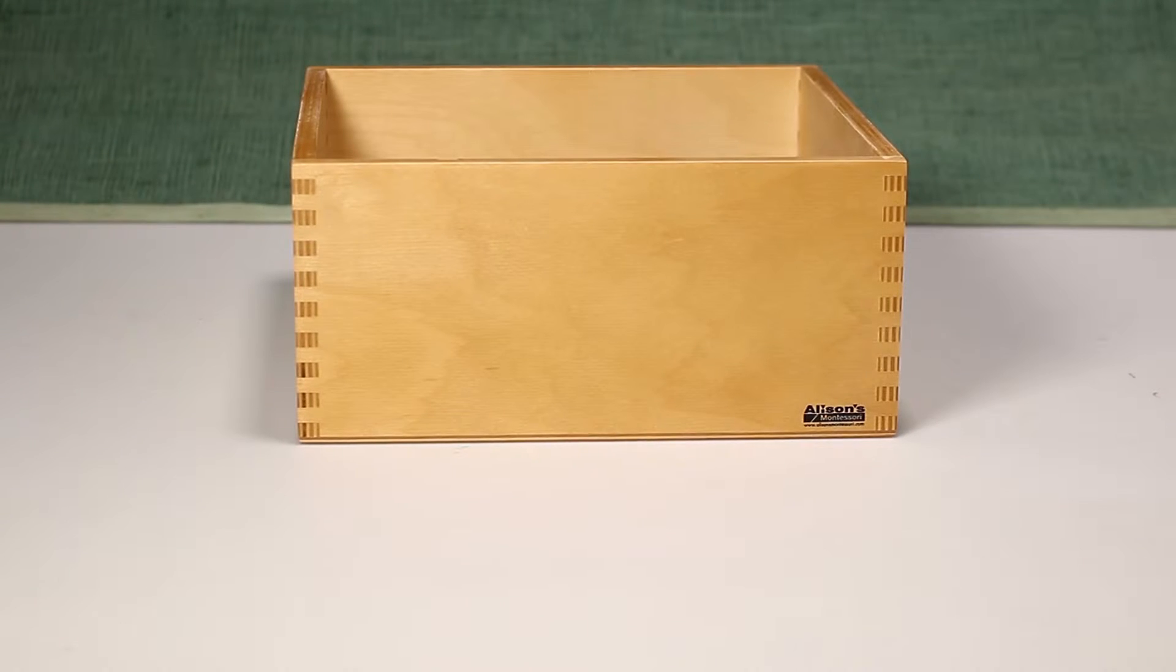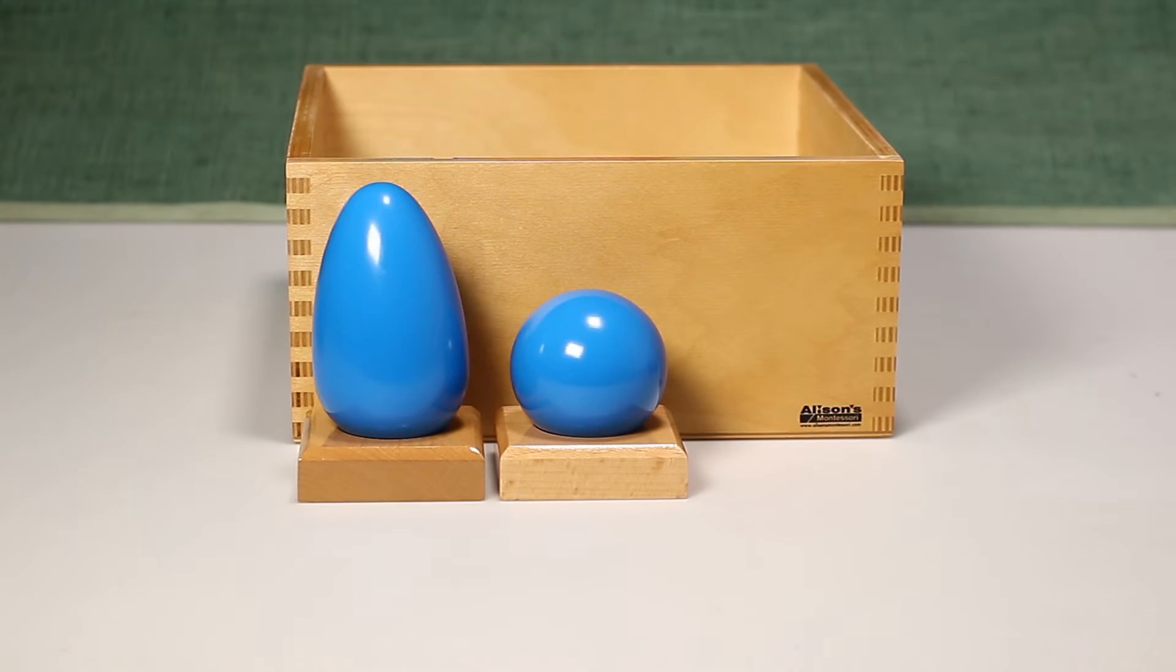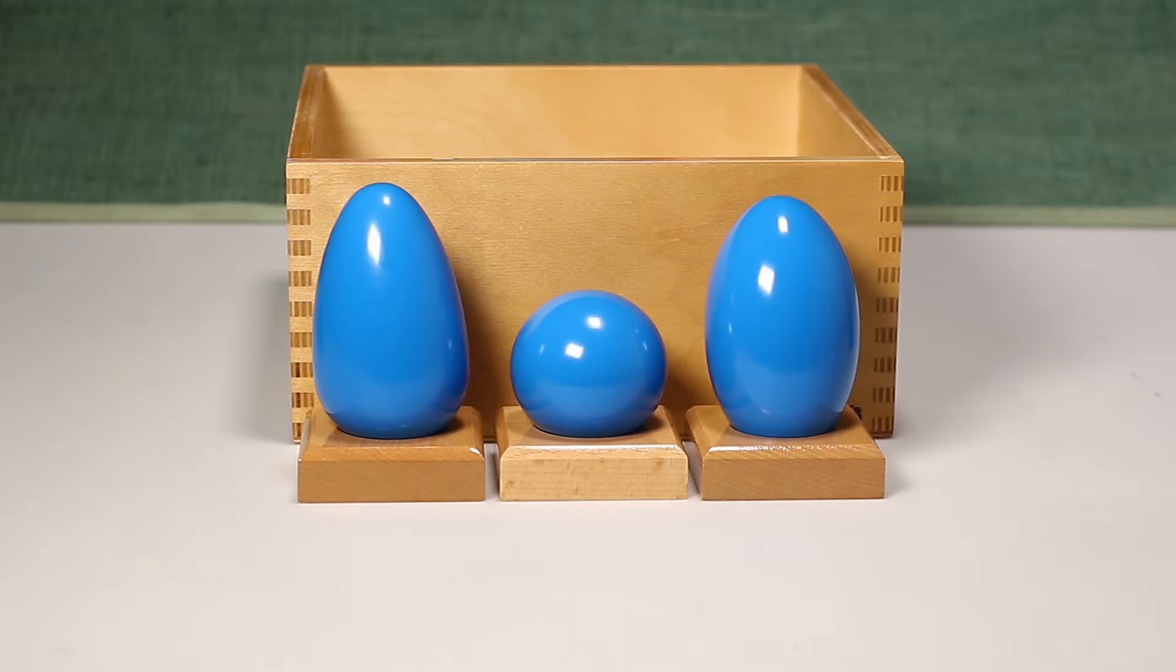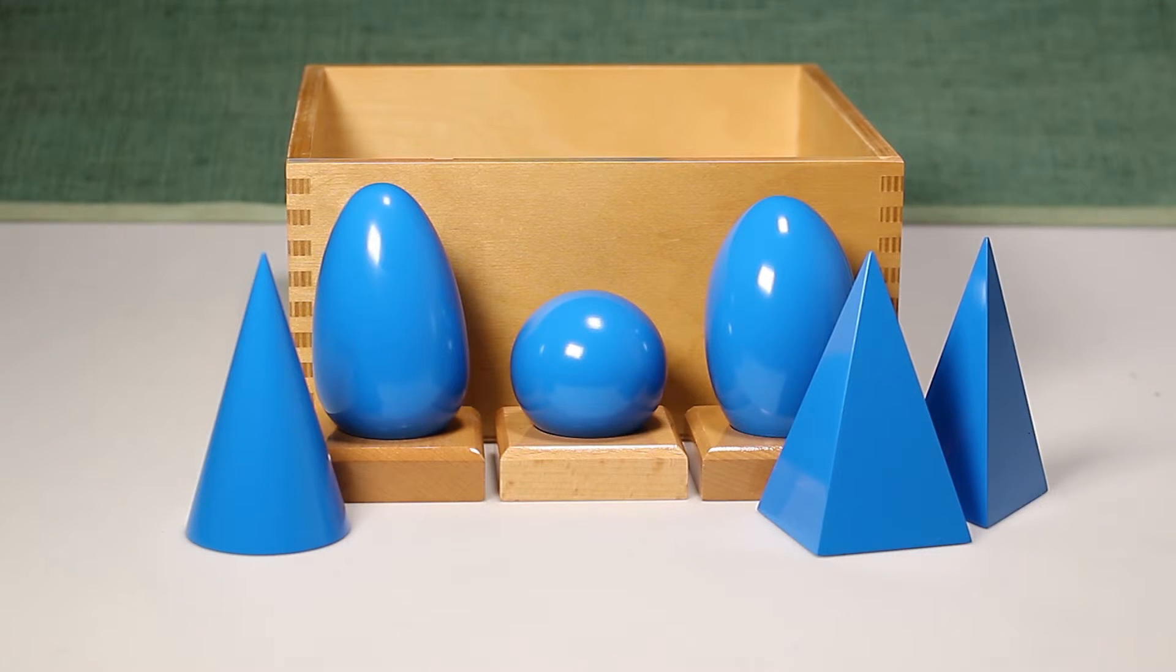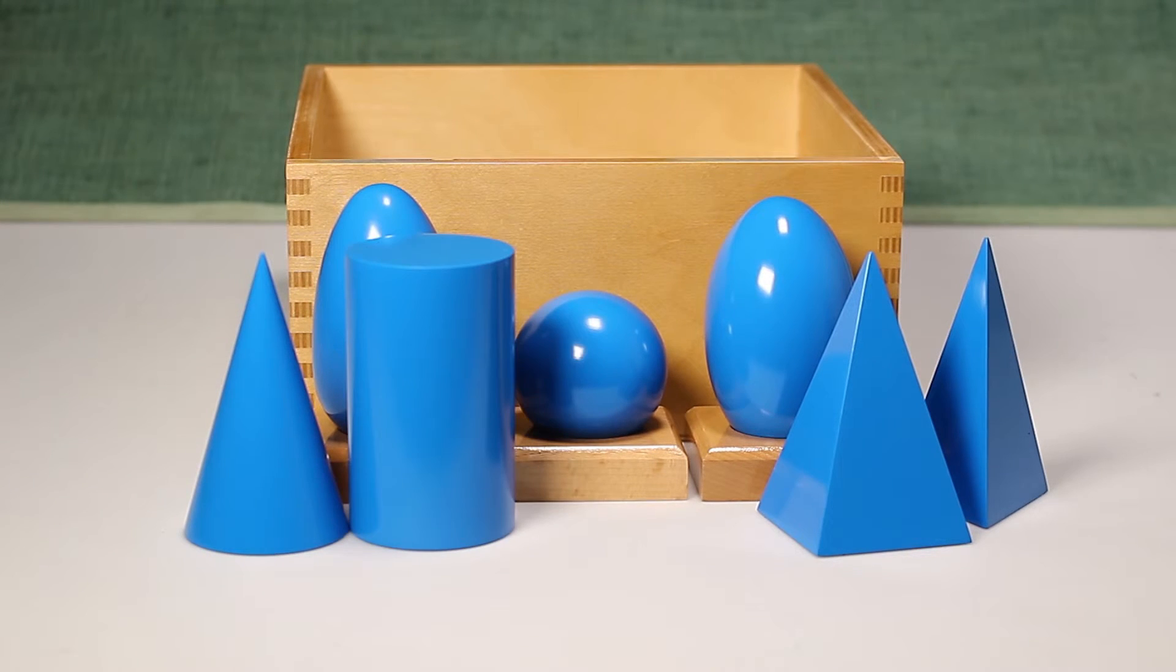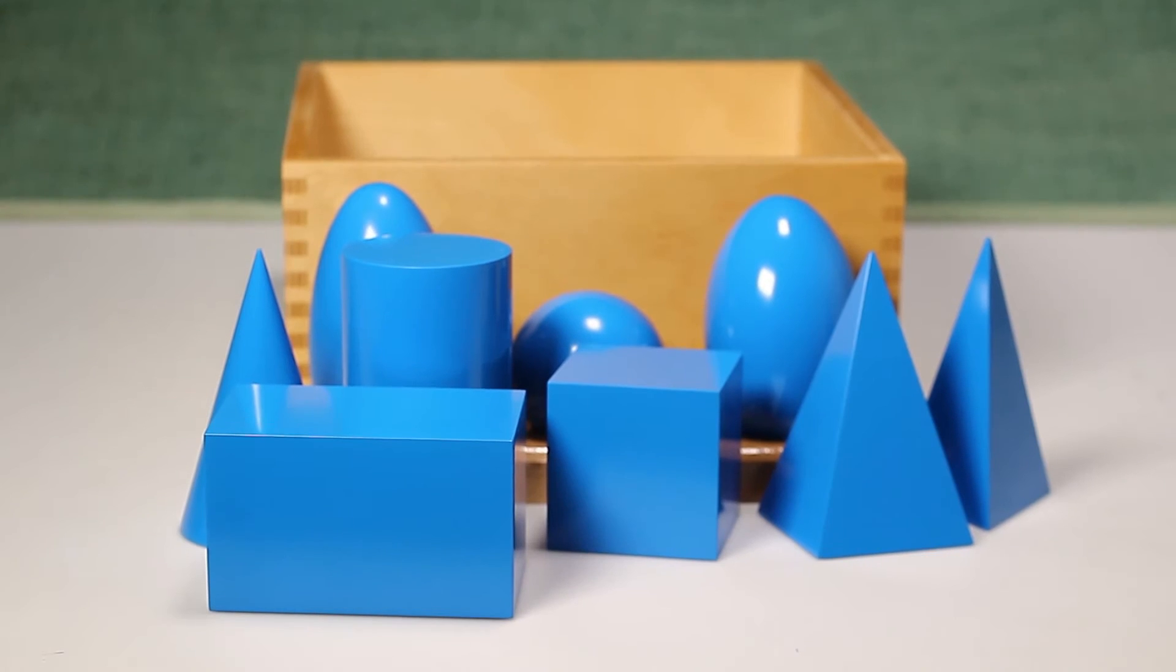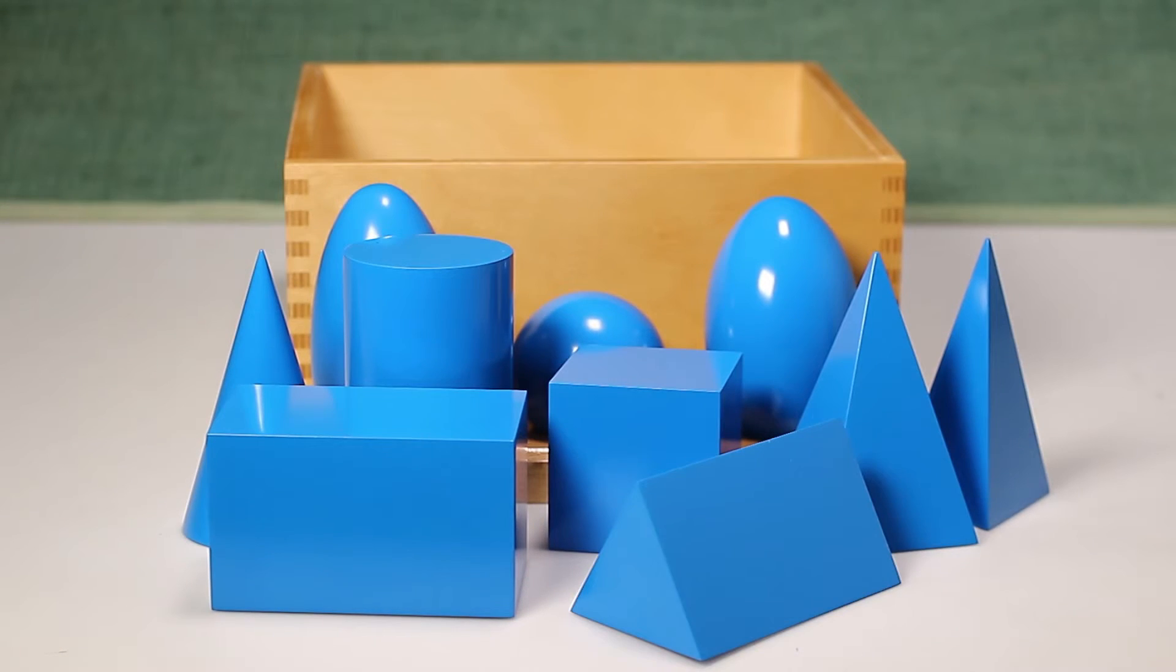The solids in these sets are a sphere, ovoid, ellipsoid, cone, triangular-based pyramid, square-based pyramid, cylinder, cube, rectangular prism, and a triangular prism.